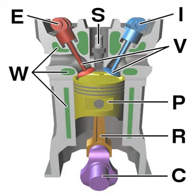An internal combustion engine is a heat engine where the combustion of a fuel occurs with an oxidizer in a combustion chamber that is an integral part of the working fluid flow circuit.